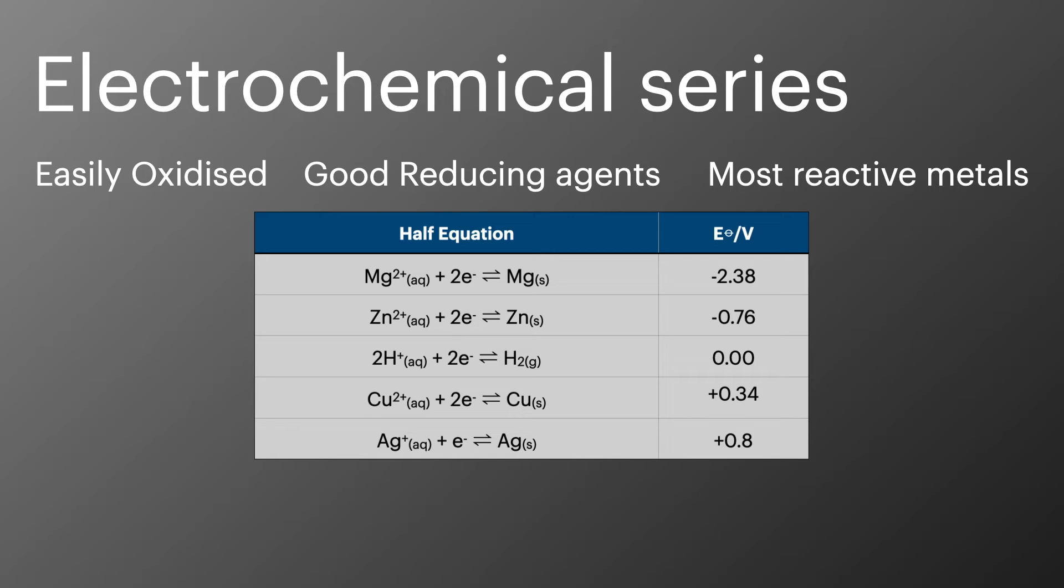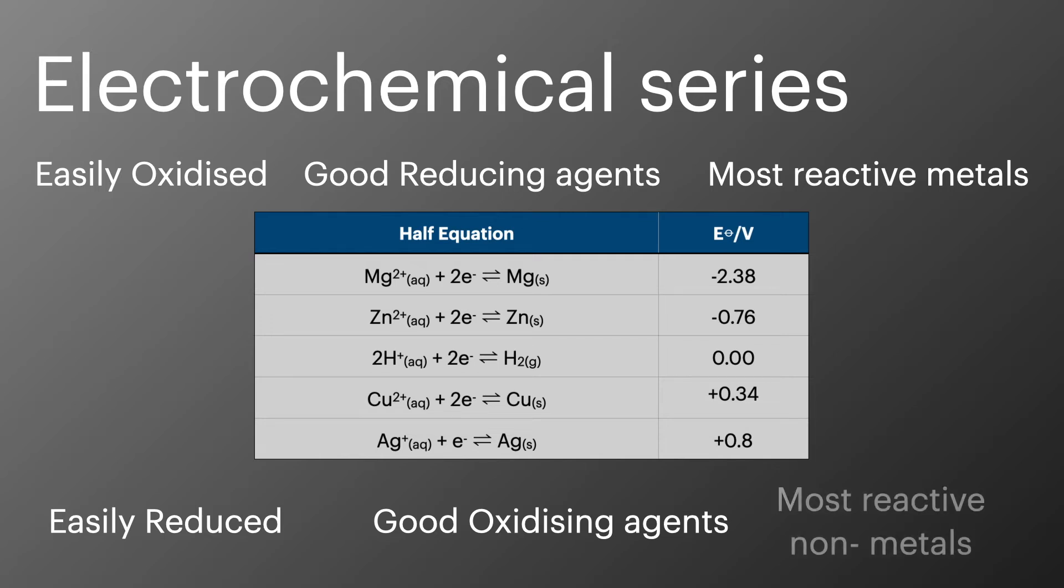At the bottom of the table, we'll have species which are more easily reduced. They make better oxidizing agents. And these ones will be the most reactive non-metals. Now we haven't got any non-metals on this table at the moment, but we'll be looking at those in our next episode.